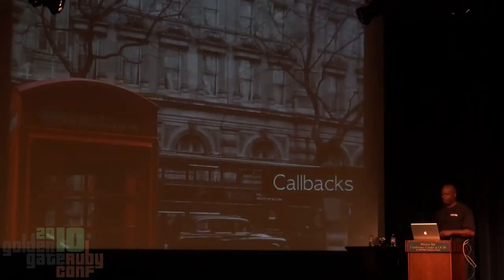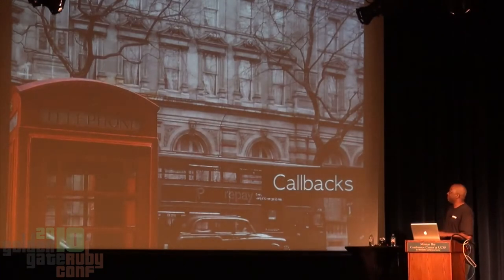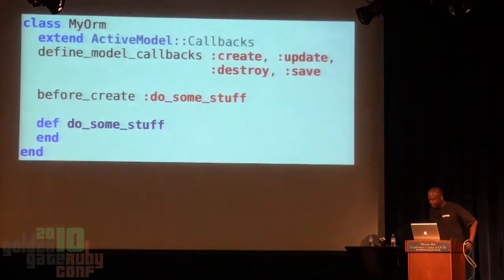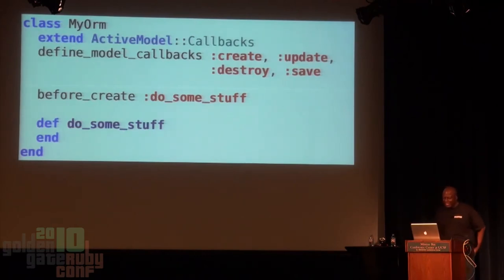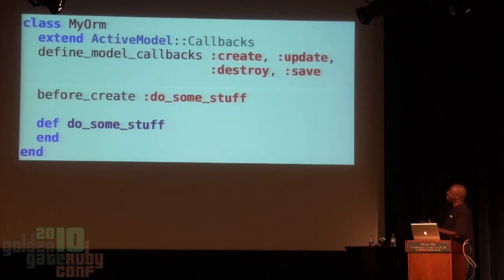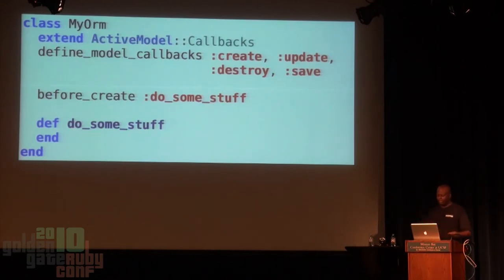Next let's talk about callbacks. I like pictures of phone booths. In Active Record you're able to do before_create and have a whole chain of callbacks. Well, Active Model helpers give you the ability to create these callbacks in your own code with just a couple of extra lines. All you need to do is extend Active Model callbacks, define which callbacks you want, and then you can do the regular before_create and do some stuff — because we all do some stuff in our apps.